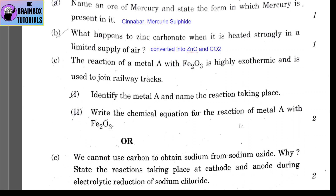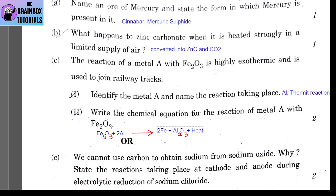Part C: the reaction of metal A with Fe₂O₃ is highly exothermic and is used to join railway tracks. Number 1: identify metal A — it is aluminium (Al). The reaction is called the thermit reaction. Number 2: the chemical equation is Fe₂O₃ + 2Al → 2Fe + Al₂O₃ + heat, because it is an exothermic reaction.